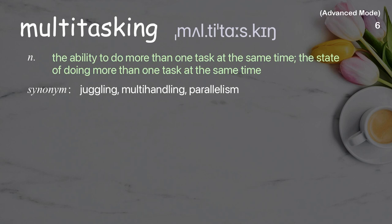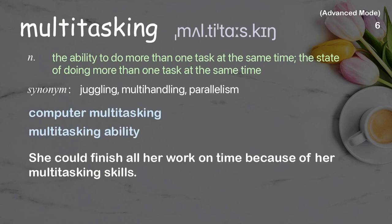Multitasking. The ability to do more than one task at the same time; the state of doing more than one task at the same time. Examples: Computer multitasking. Multitasking ability. She could finish all her work on time because of her multitasking skills.